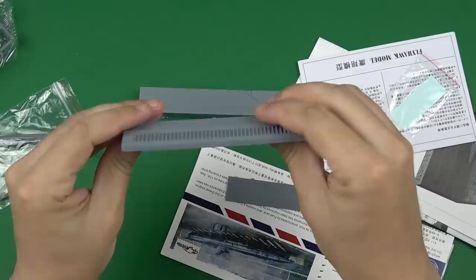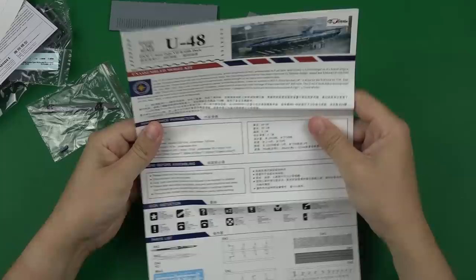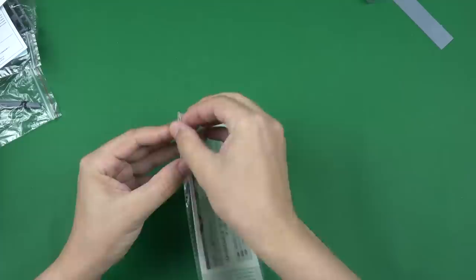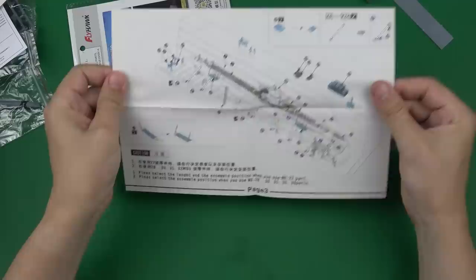The instruction page looks quite well. Of course, as usual, I couldn't stop without getting something extra together with it. This is an extra PE detail set from Flyhawk for the kit. This set really improves the result.